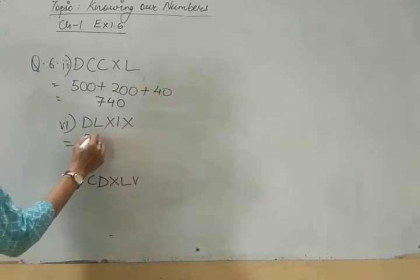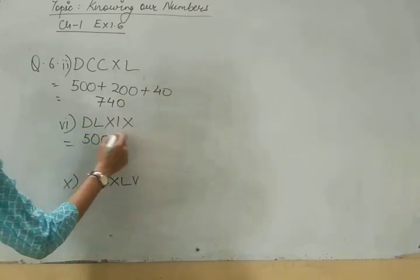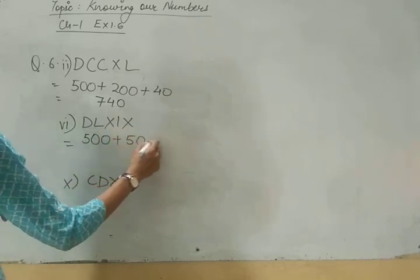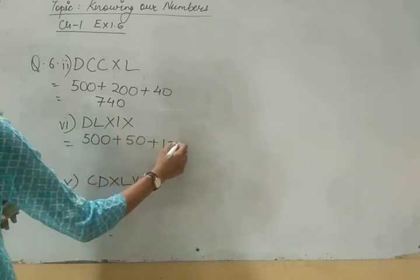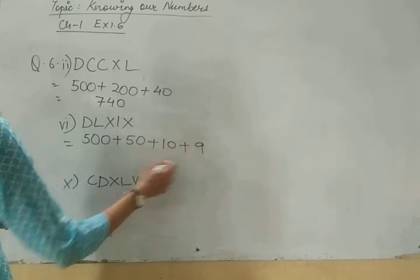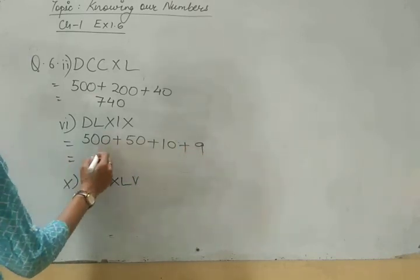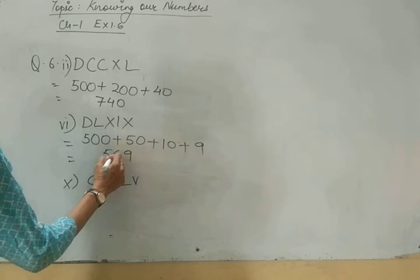For D, we will write 500. For L, 50. For X, 10 and for IX, we will write 9. It will become 569. Clear?